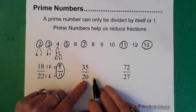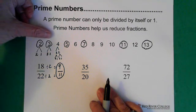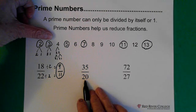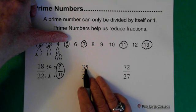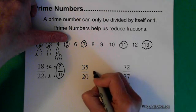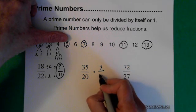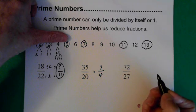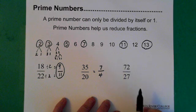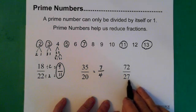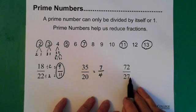Thirty-five over twenty. Obviously not divisible by two. Twenty is definitely not divisible by three, but they're both divisible by five. So we divide thirty-five by five and get seven, and divide twenty by five and get four. Now we notice four is an even number and seven is an odd number, so this is not divisible by two.